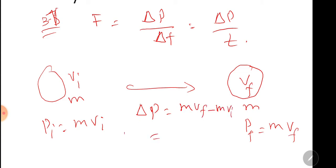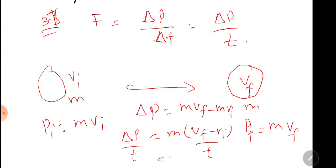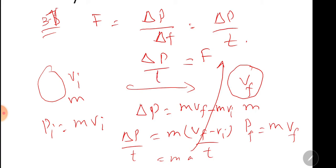Taking m common: m(vf minus vi) divided by t, which equals ma. This equals force, and this also equals Δp divided by t, which relates momentum with force.